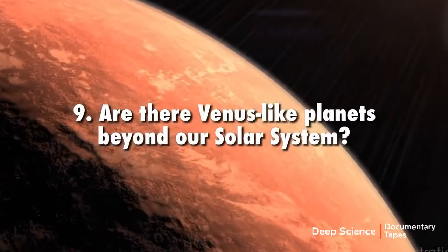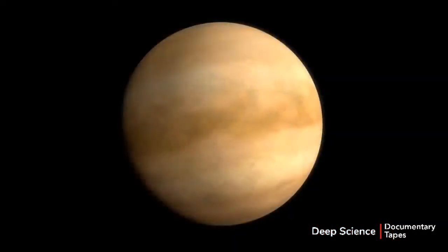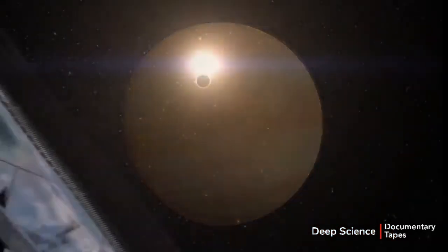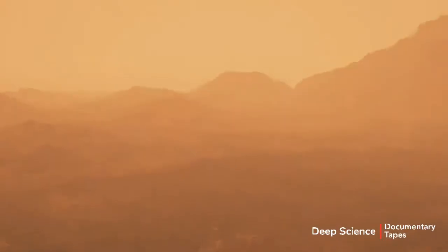Are there Venus-like planets beyond our solar system? We will be able to relate what we discover at Venus to Venus-like exoplanets observed by the James Webb Space Telescope. If Venus shows signs of previous habitability, that could mean these exoplanets might be habitable as well.